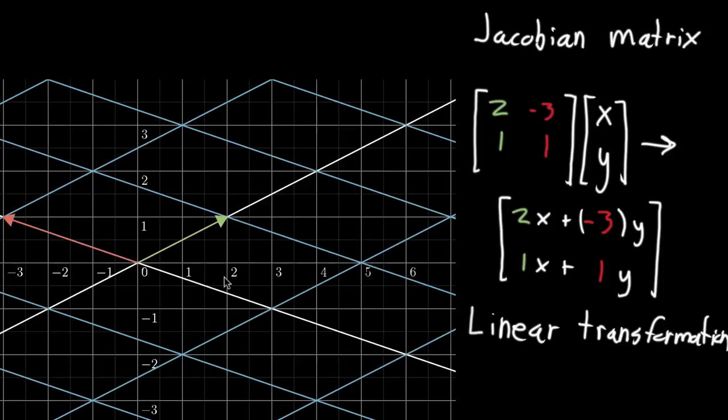And there are a couple important things to note. First of all, all of the grid lines remain parallel and evenly spaced, and they're still lines. They didn't get curved in some way. And that's very special. That is the geometric way that you can think about this term, this idea of a linear transformation.